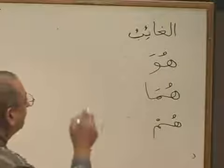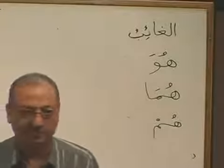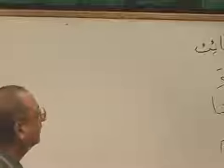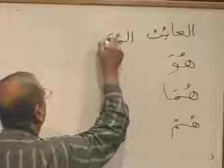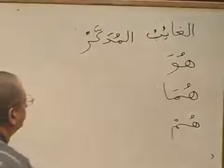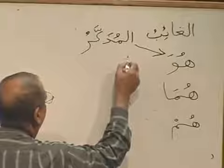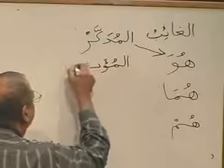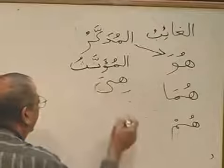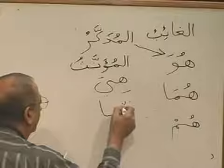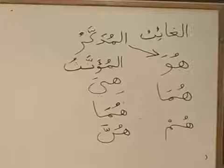This is masculine — we call it Muzakkar. And then we come to Muannas. I will write down Al-Muzakkar. Please write down Al-Muzakkar next to it. Then I will write down Muannas. And then it will become Hiya, then Huma again, and then Hunna. Are you with me, brothers and sisters? It is Hunna.